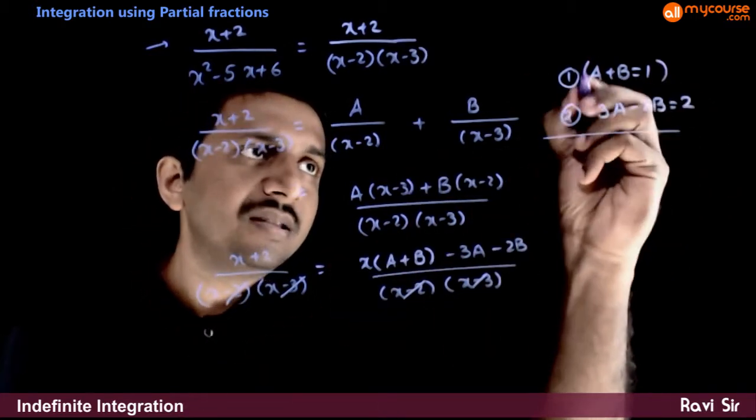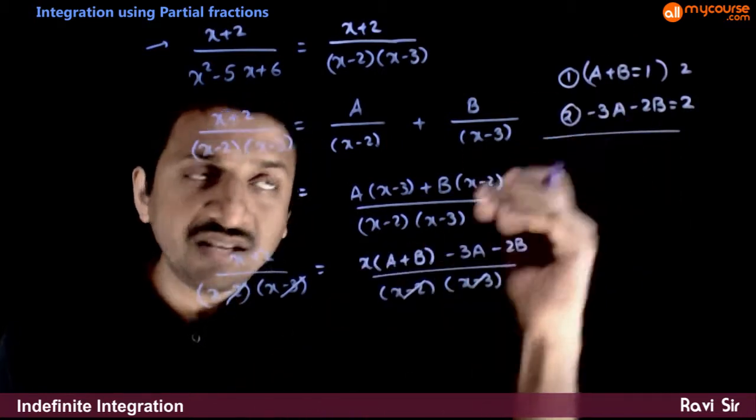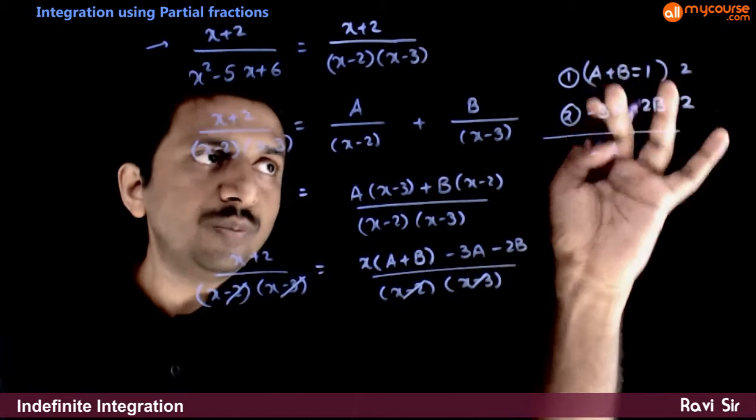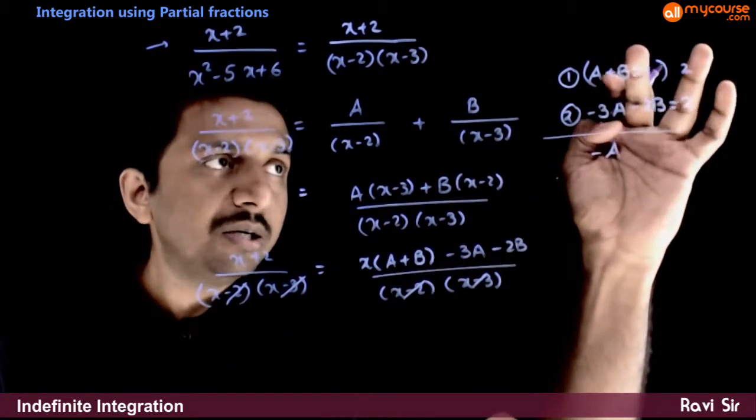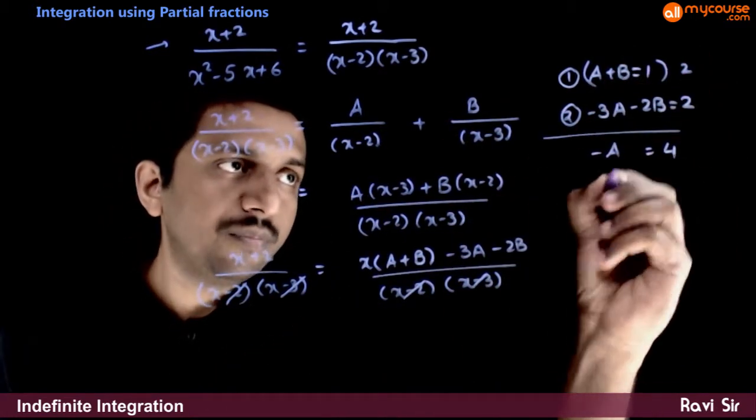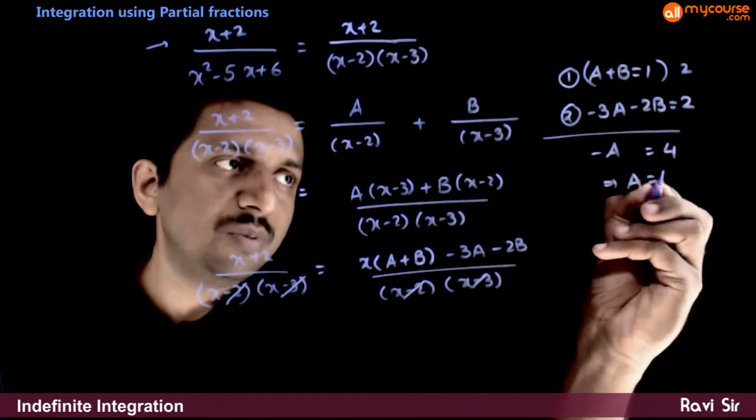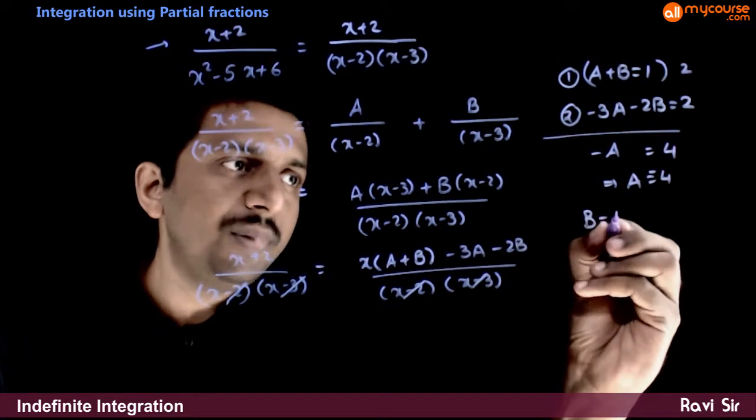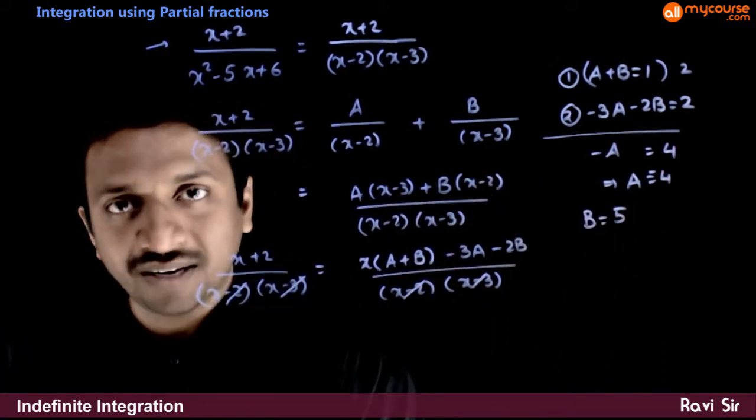You can solve these two to get a and b. I will multiply the first equation with 2 and I will add these two. 2a minus 3a is minus a. 2b minus 2b gets cancelled. 2 plus 2 is equal to 4. This implies a has to be equal to minus 4. Once a is equal to minus 4, b has to be equal to 5.